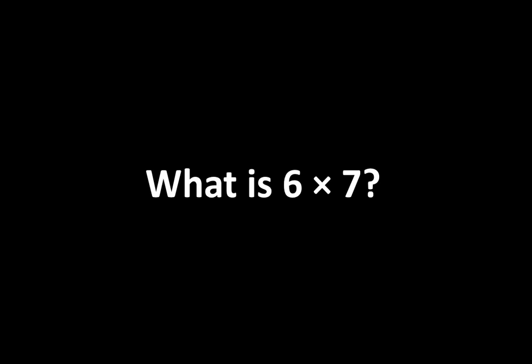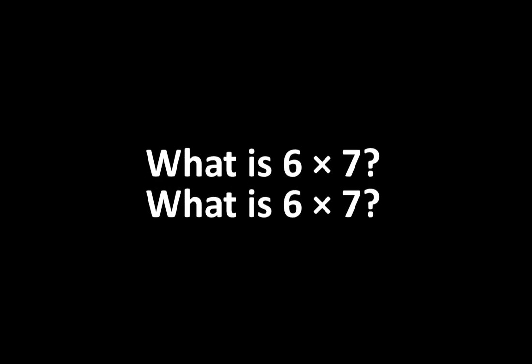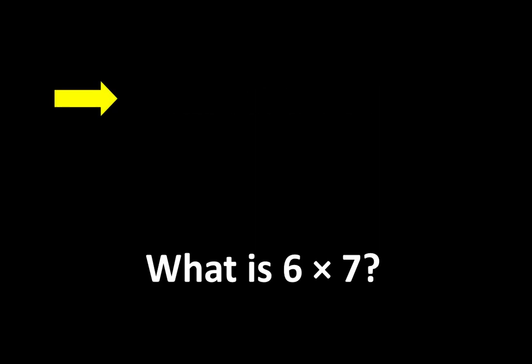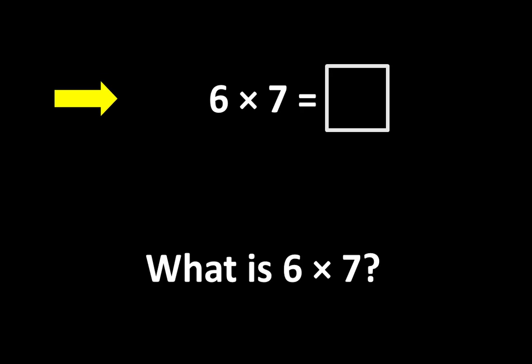Every now and then you might hear someone ask, what is 6 times 7? And you may hear someone else answer, 6 times 7 is 42. What is interesting is that this question can mean several different things. When someone asks what is 6 times 7, what they might mean is: 6 times 7 is equal to what number? The answer to that question is 42.